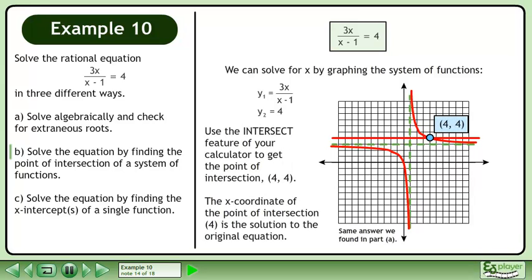Use the intersect feature of your calculator to get the point of intersection 4, 4. The x-coordinate of the point of intersection 4 is the solution to the original equation. This is the same answer we found in Part A.